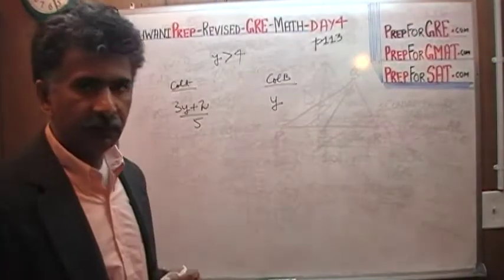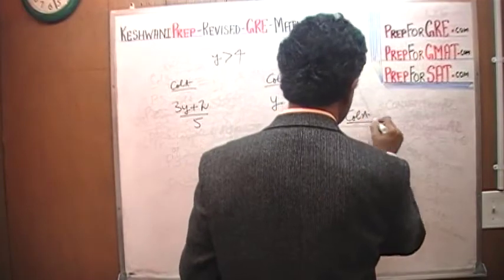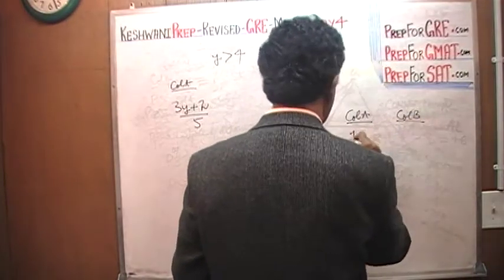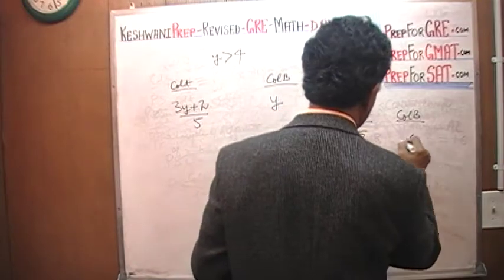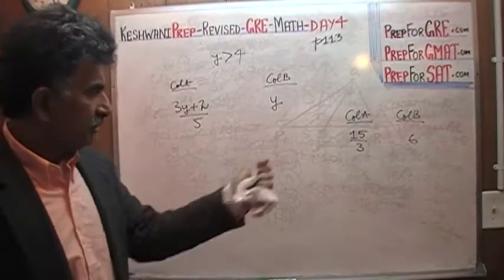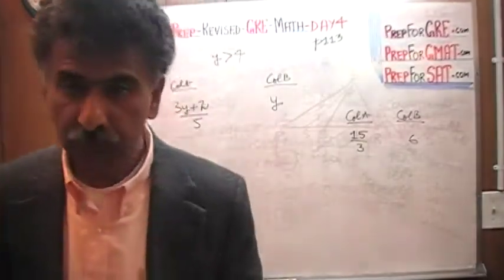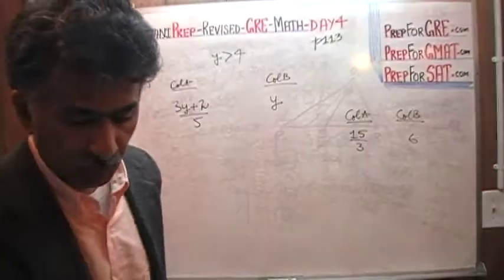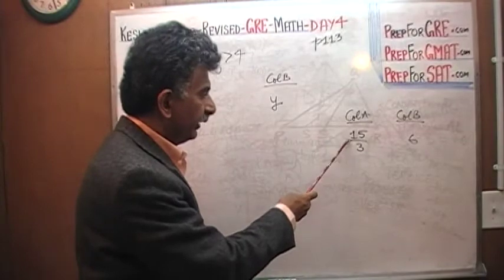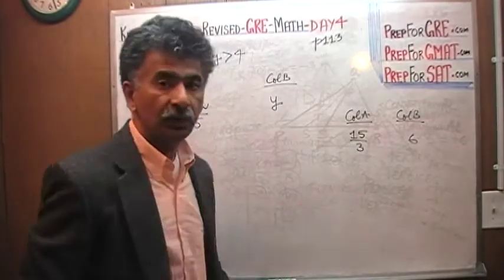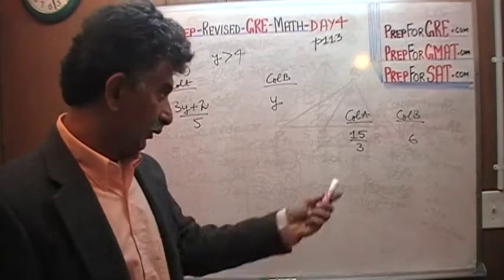Before we do this, let me ask you a question. Here is column A and column B: 15 over 3 versus 6. Which column is bigger? Now you could actually compute the two quantities as presented — figure out that 15 over 3 is 5, which is less than 6. We could do that. That is one way of doing it, and because these are numbers we can do them.